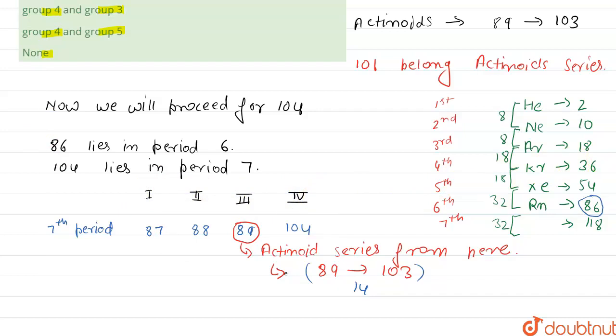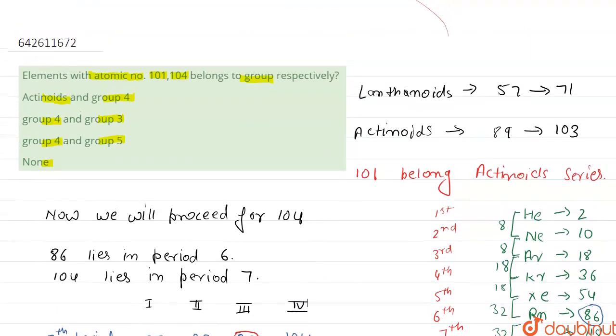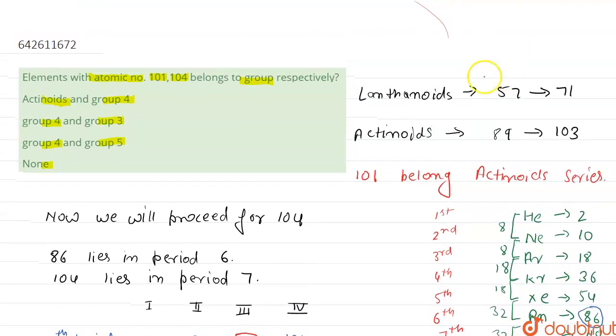So it is clear that the element with atomic number 101 belongs to actinoid series and the element with atomic number 104 lies in group 4.